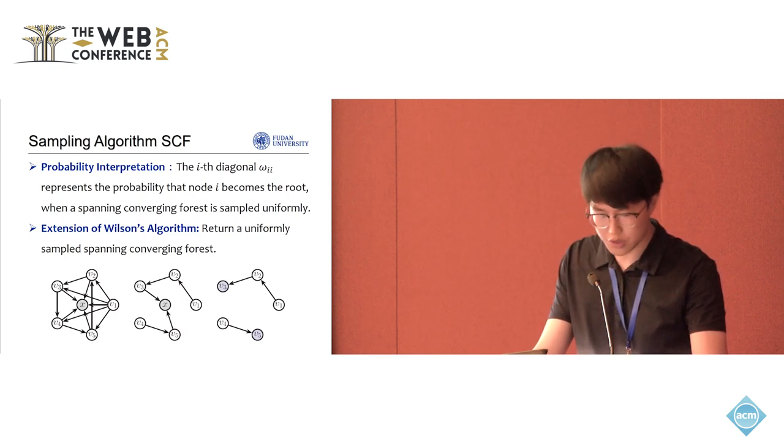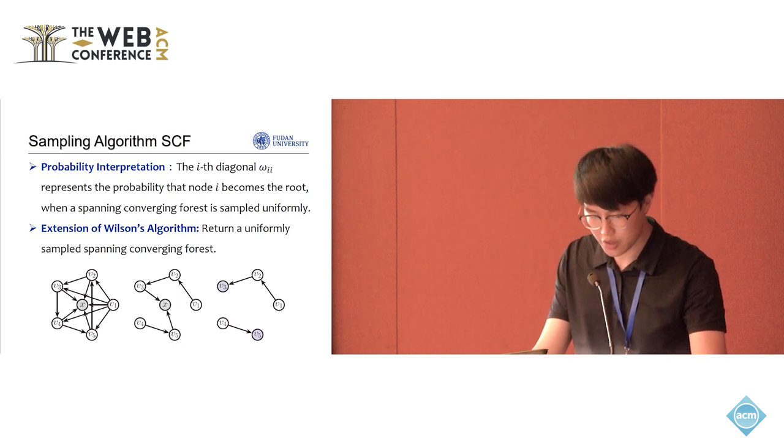Next, we use Wilson's algorithm to generate a rooted spanning tree in the augmented graph G prime, with x set as the root node.